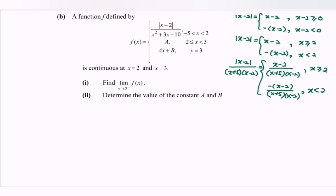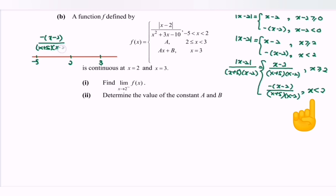Illustrating on the real number line, we have intervals: from −5 to 2, and from 2 to 3. For x approaching 2 from the left (x < 2), we use −(x − 2) / [(x + 5)(x − 2)]. At x = 2, the function equals a. For x from 2 to 3, the function is also a, and at x = 3, the function is ax + b. No function is given for x greater than 3.